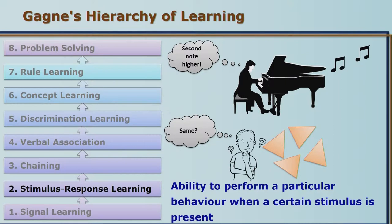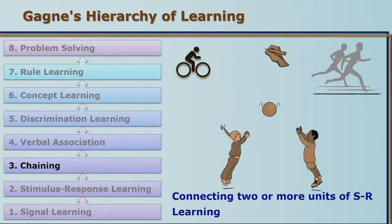A higher order of learning than this is called chaining, in which we learn to give responses in a particular order, and all these responses have been learnt previously. For example, when some game is to be played there are a series of behaviors which have to be exhibited in a sequence. If one is to cycle, the individual first learns to sit on the bicycle, then keep the legs on the pedals, then hold the handles correctly, then push the pedals. This sequence of responses is remembered in the form of a chain and exhibited in continuation. Such learning involving several learnt responses given in sequence is called chaining, and this is a higher-order learning than giving a specific response to a specific stimulus.